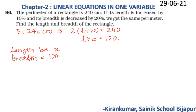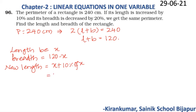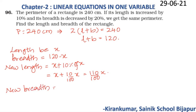If the length is increased by 10%, the new length will be x plus 10% of x, which is x plus (10/100)x. On simplification, we get it as (110/100)x. They have given that the breadth is decreased by 20%, so the new breadth will be equal to the actual breadth minus 20% of it.